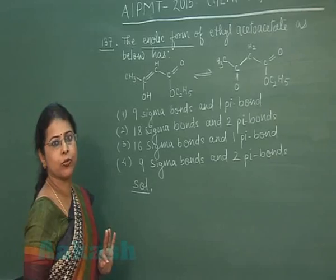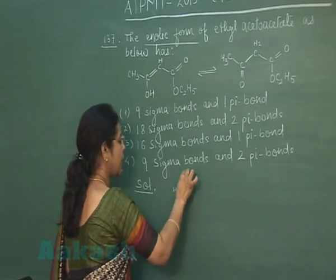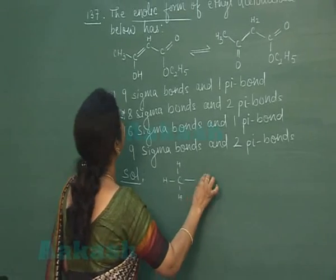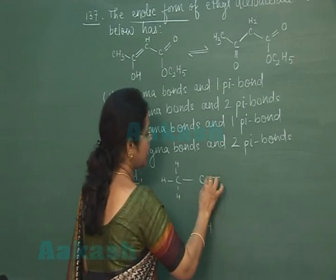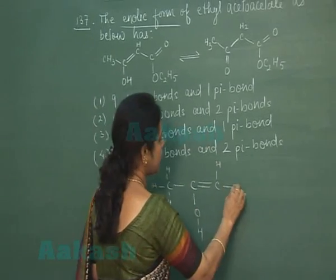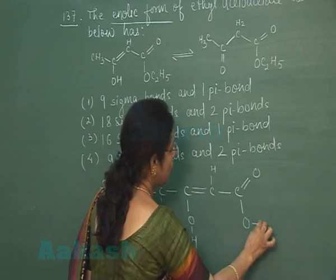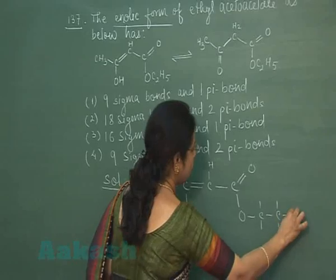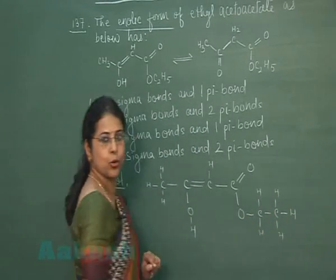This is CH3 carbon bonded to 3 hydrogen atoms. This is C, OH, double bond carbon, single bond hydrogen. This is carbon, oxygen, O, C2H5, and then hydrogen, hydrogen, hydrogen, hydrogen, hydrogen.